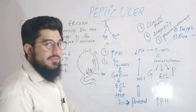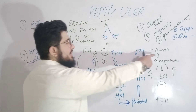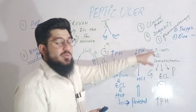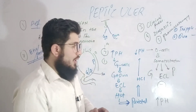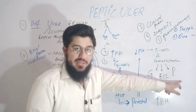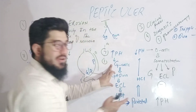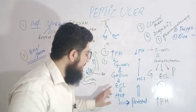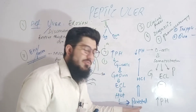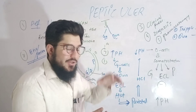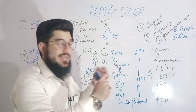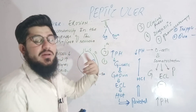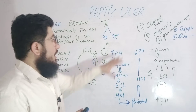When pH drops too low, D cells are stimulated. These D cells release somatostatin, which inhibits G cells, ECL cells, and parietal cells. As a result, gastrin, histamine, and HCl secretion all stop, so the pH stops dropping and is maintained at a certain level. This is how pH homeostasis in the stomach is maintained by G cells, ECL cells, D cells, and parietal cells.